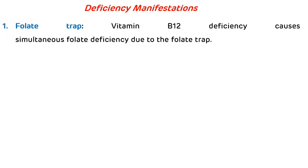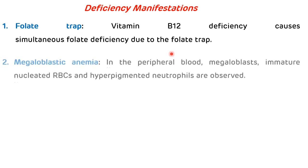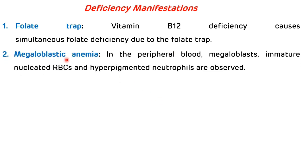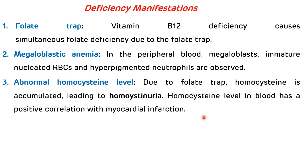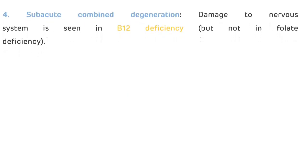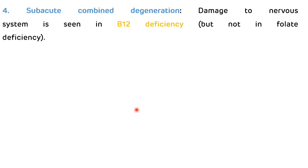Deficiency manifestations of vitamin B12: First is the folate trap — vitamin B12 deficiency causes simultaneous folate deficiency due to the folate trap. Second is megaloblastic anemia — in the peripheral blood, megaloblasts, immature nucleated RBCs, and hypersegmented neutrophils are observed. Third is abnormal homocysteine level — due to the folate trap, homocysteine accumulates, resulting in homocystinuria. Homocysteine level in the blood has a positive correlation with myocardial infarction. Fourth and important manifestation is sub-acute combined degeneration — damage to the nervous system is seen in B12 deficiency but not in folic acid deficiency.